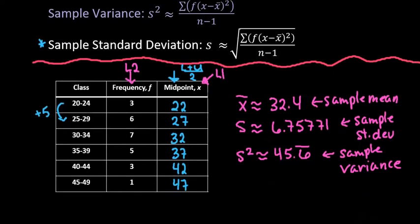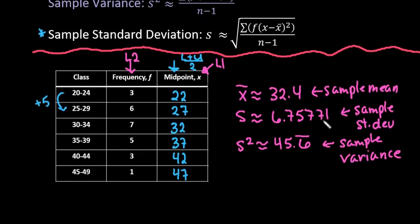If you are doing hand calculations, you would find the variance first, and then square root it to find the sample standard deviation. If you're using a calculator, you find the sample standard deviation first, and then you square it to get the variance.